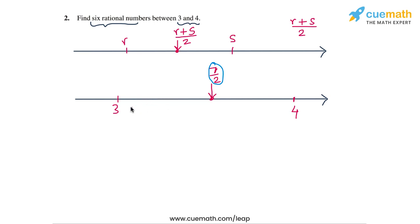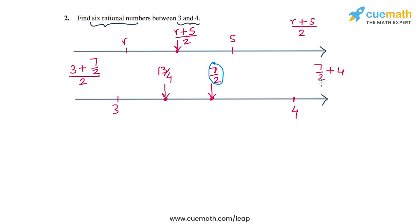Now we can find the midpoints between 3 and 7 by 2, and between 7 by 2 and 4. Both of these midpoints will be rational numbers as well. The midpoint between 3 and 7 by 2 is 3 plus 7 by 2, all divided by 2, which equals 13 by 4. The midpoint between 7 by 2 and 4 is 15 by 4. So 13 by 4 and 15 by 4 are two other rational numbers that lie between 3 and 4.